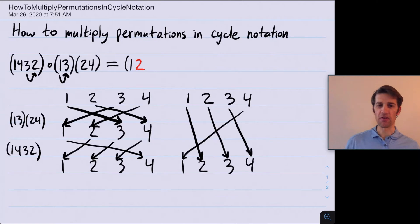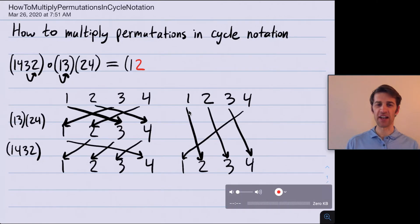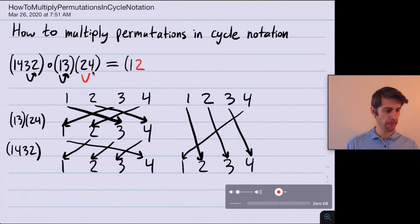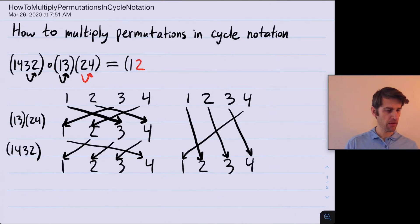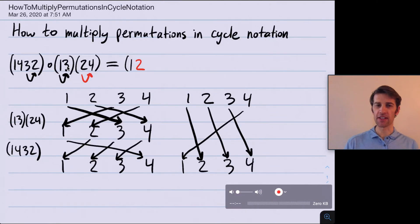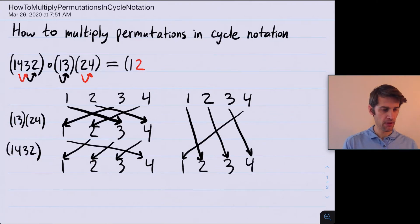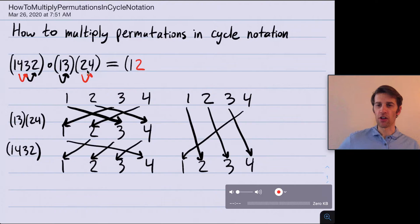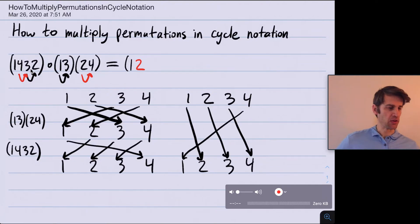That agrees with the picture. Now let's figure out where 2 goes. First we apply this function and 2 goes to 4. This doesn't move 4 anywhere, and this moves 4 to 3. So overall 2 goes to 4, which then goes to 3 — so 2 goes to 3.